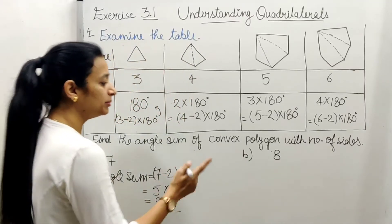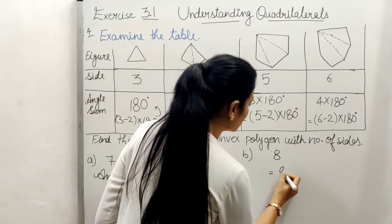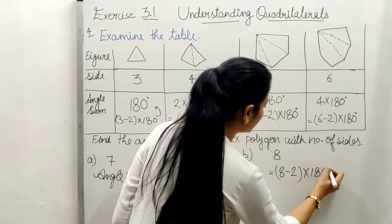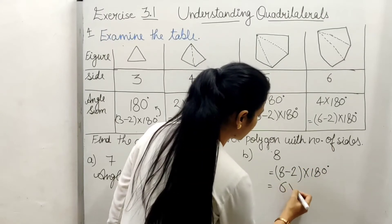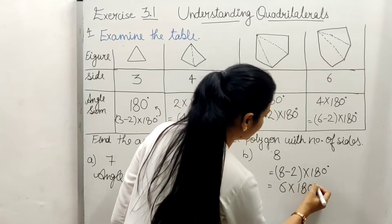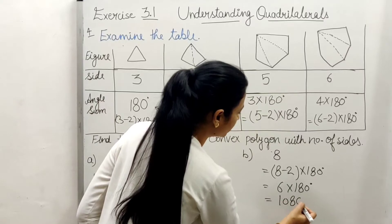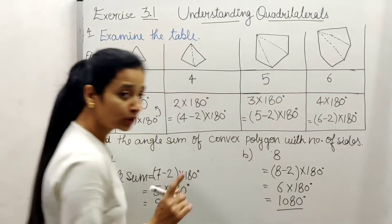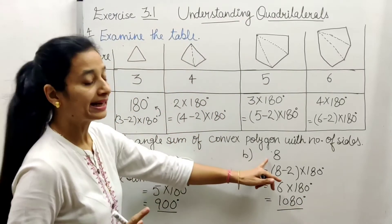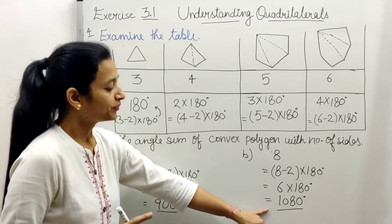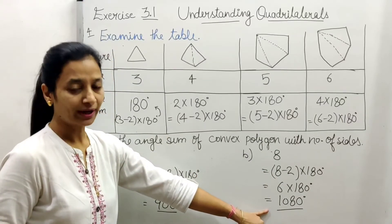b me bhi same formula apply ho ga. 8 minus 2 into 180 degree and 6 into 180 and multiply karenge to 1080 degree. So jis polygon ki side kitne hai? 8 hai, uske angle sum kitna ho ga? 1080. Now, next.